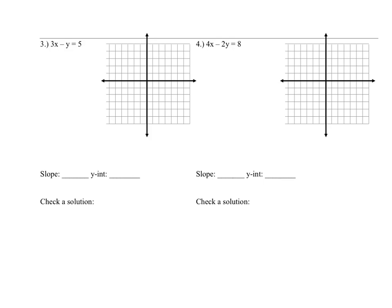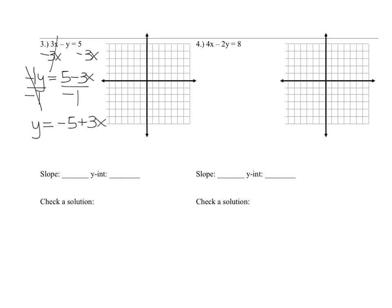For the next one, to get y alone, subtract 3x first. Pay attention to that negative sign in front of the y — that's important. You get −y = 5 − 3x, which you can also write as −3x + 5. Since the coefficient of negative y is −1, divide everything by −1. You get y = 3x − 5. So the slope is 3 and the y-intercept is (0, −5).